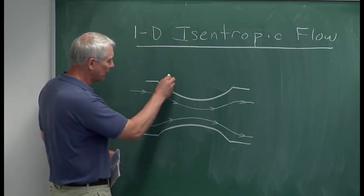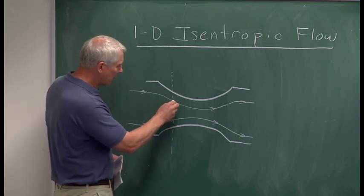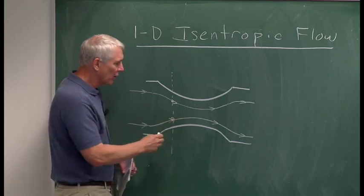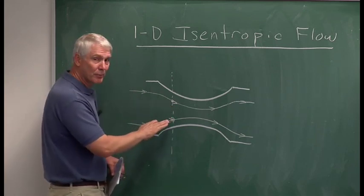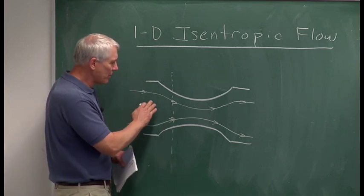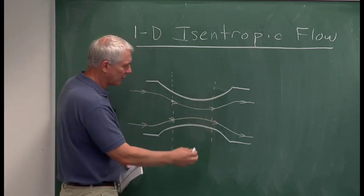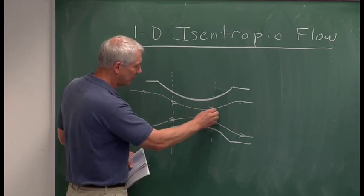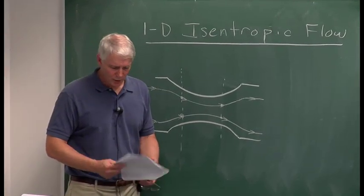For example, if we just put a dotted line here and look at this point, by one-dimensional flow we mean the properties at this point are exactly the same as they are at this other point. So even though the top flow is going down while the bottom flow is going up — geometrically that's not one-dimensional — what we mean is that if we draw a line through the flow, all the properties are exactly the same. The density here is the same as the density up here. So that's the definition of one-dimensional flow.